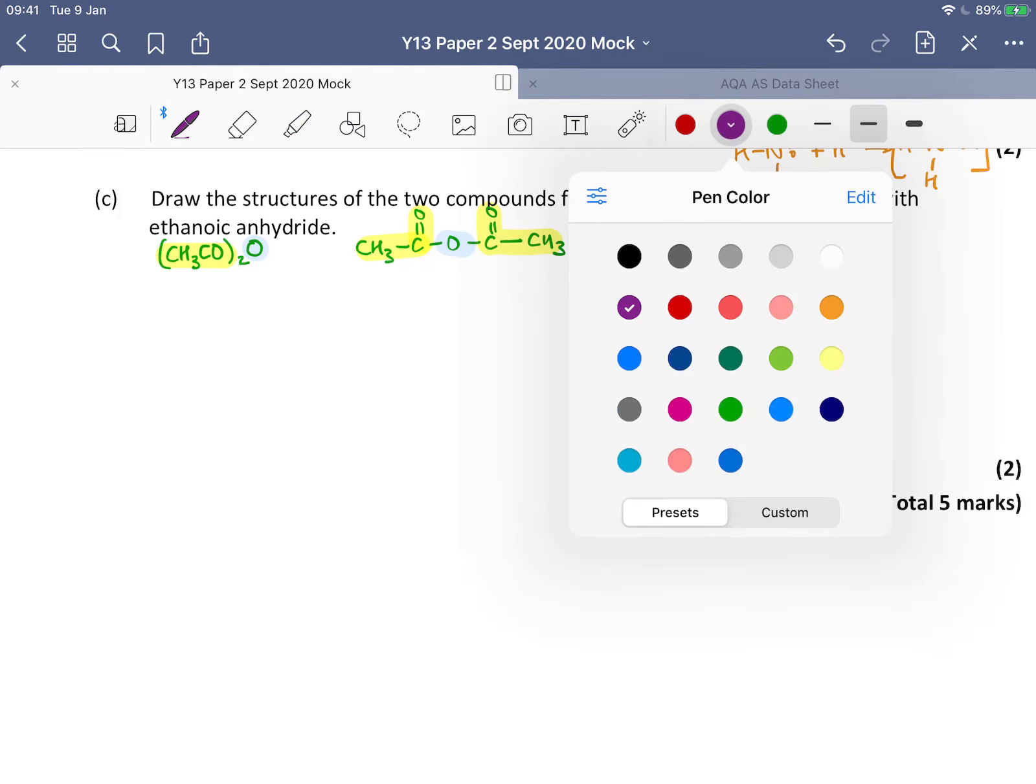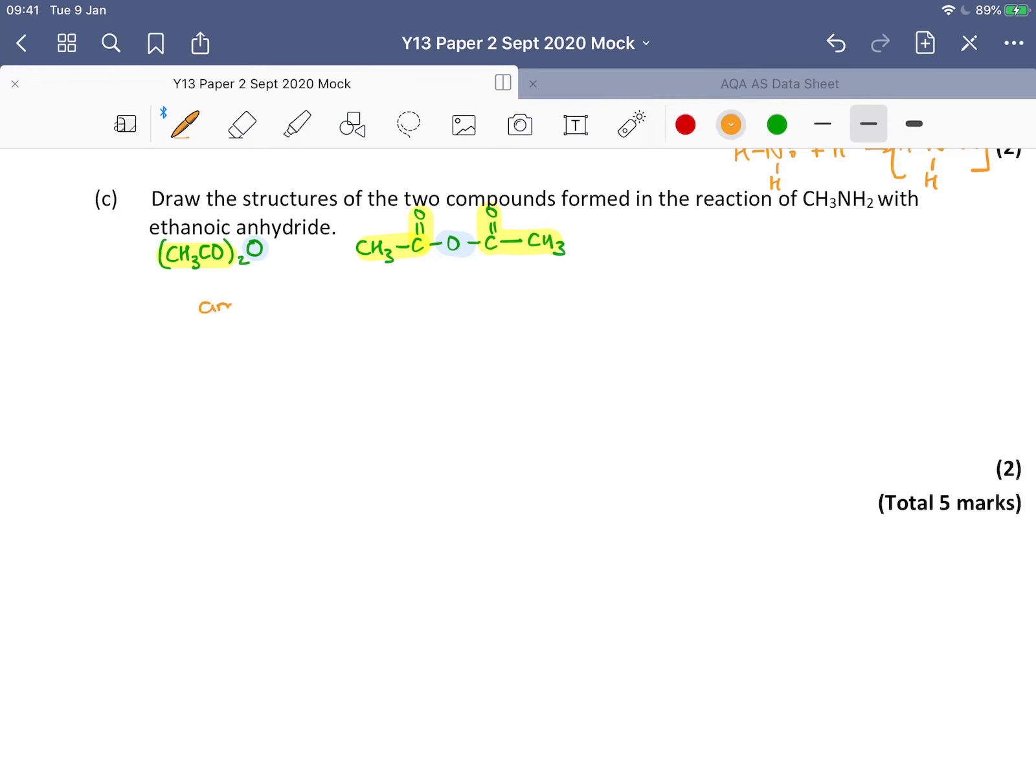If we think about the overall reaction equation, so an amine plus ethanoic anhydride, they are going to make an amide. And an amide is when you've got a nitrogen bonded to a carbonyl.